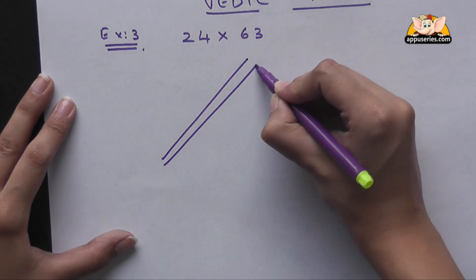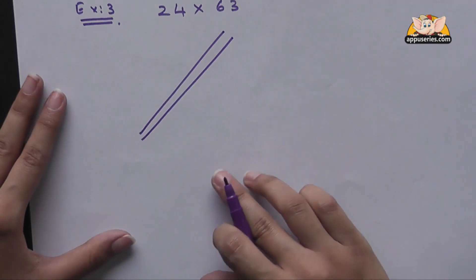So we'll take two and draw it this way. This four, we'll draw it here.